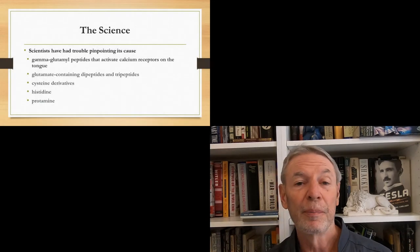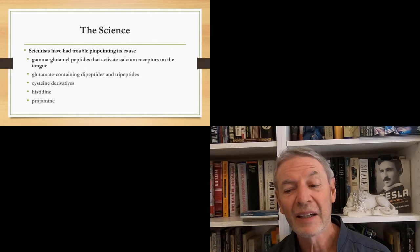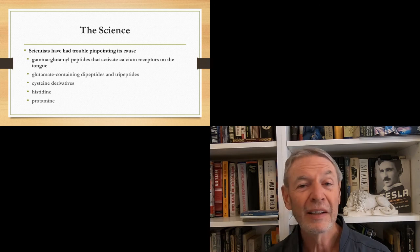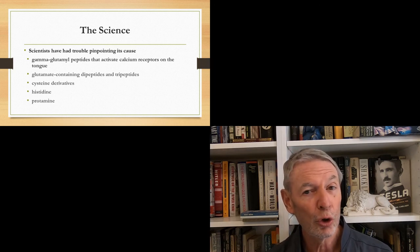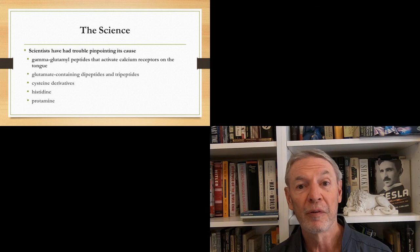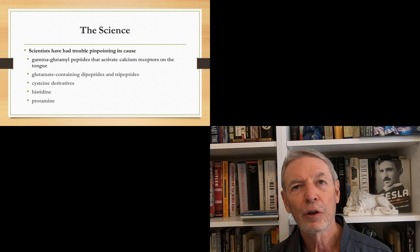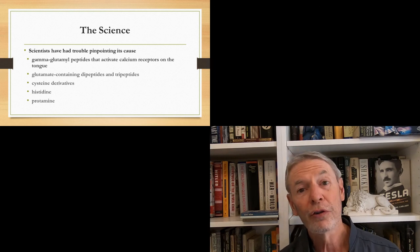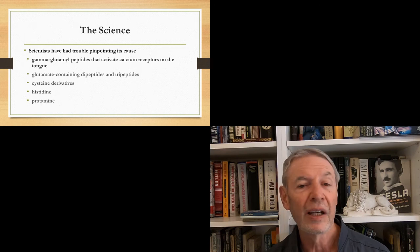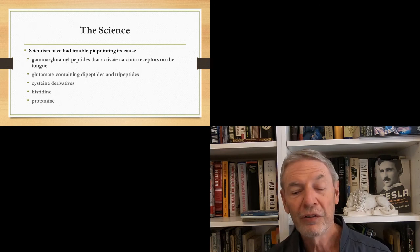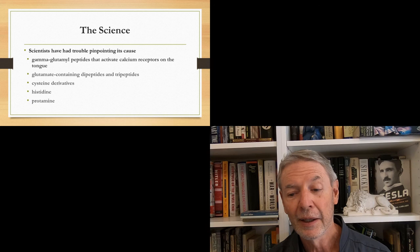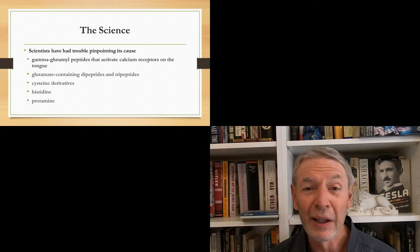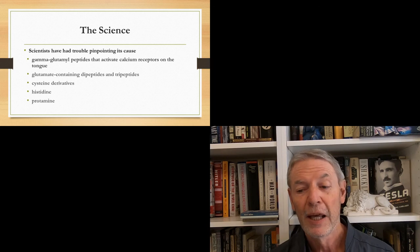Now let's talk briefly about the science behind kokumi. Scientists have had kind of a difficult time identifying the cause of kokumi. And by the way, I use that word cause very specifically. Scientists have said that kokumi is caused by gamma glutamyl peptides that activate calcium receptors in the tongue. Also, it's been associated with glutamate containing dipeptides and tripeptides, also cysteine derivatives and histidine and protamine. I don't know what any of those things are. But that's what the scientists say.